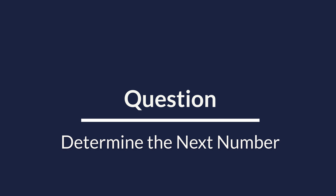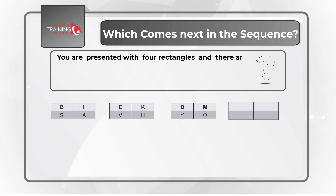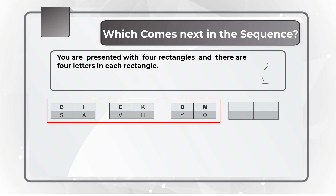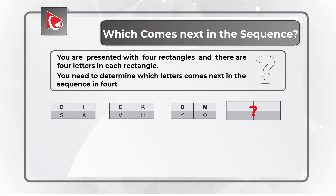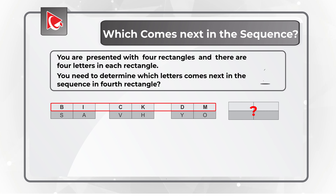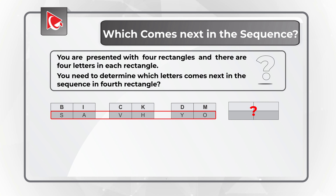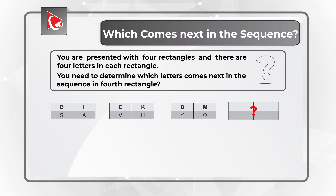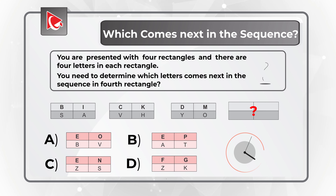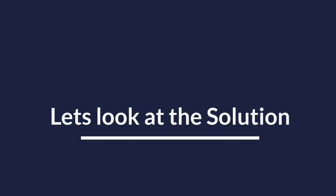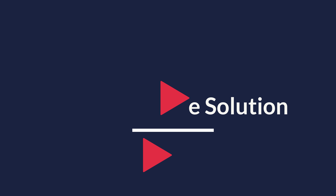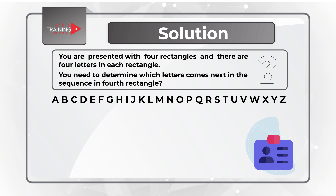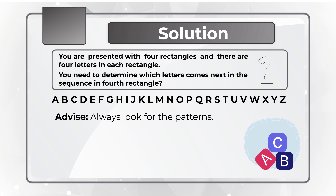Here is one of my favorite questions where you need to determine the next item in the sequence. You are presented with 4 rectangles, each containing 4 letters, with 3 rectangles having letters and you needing to determine the letters in the 4th. The upper row of letters is bold and the lower row is in regular font. You need to determine the item that comes next, with 4 different choices. To answer this correctly, you need to know the English alphabet and a little bit of math. Always look for patterns.